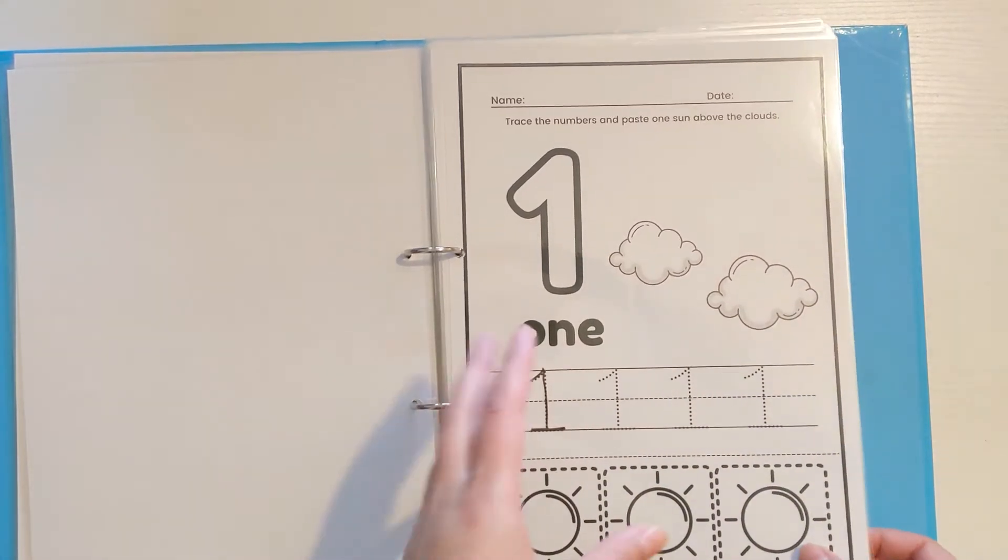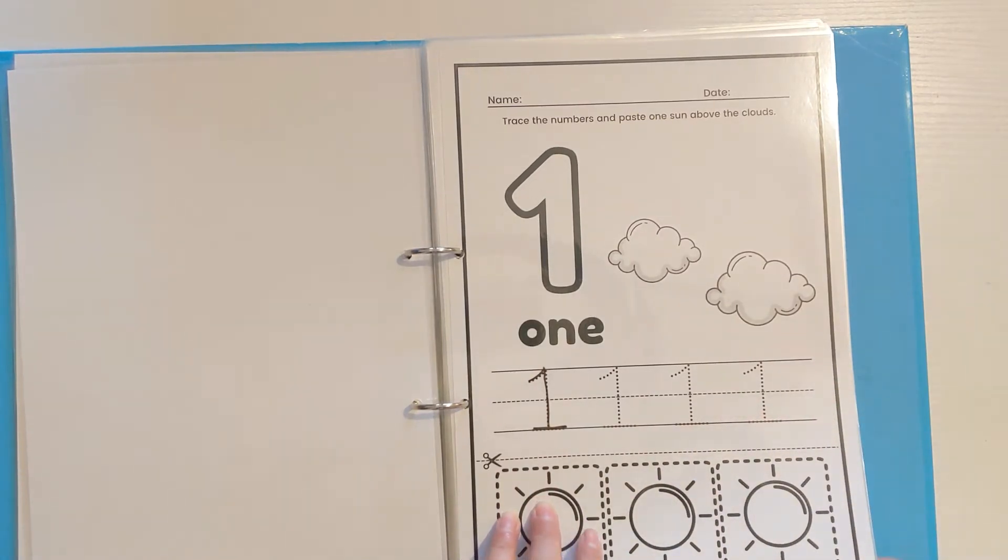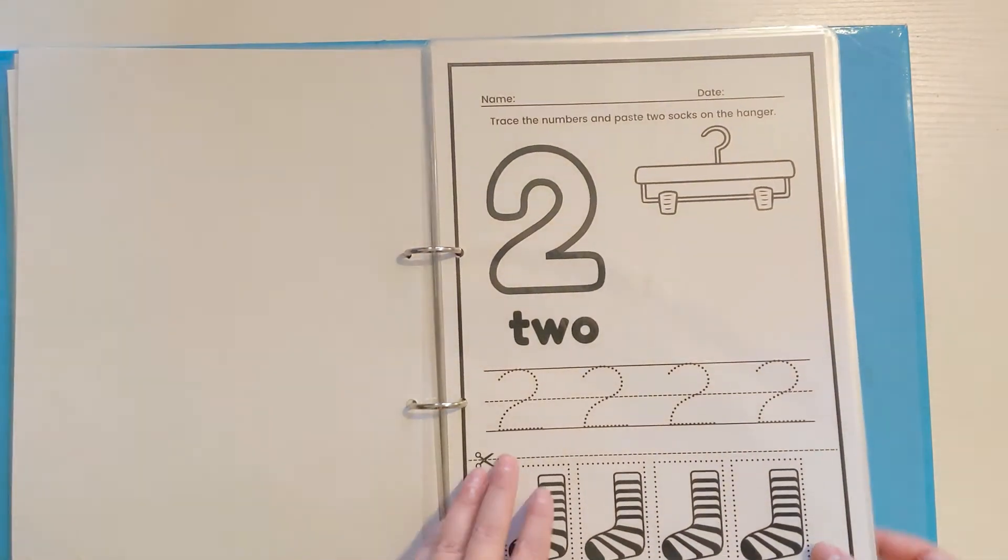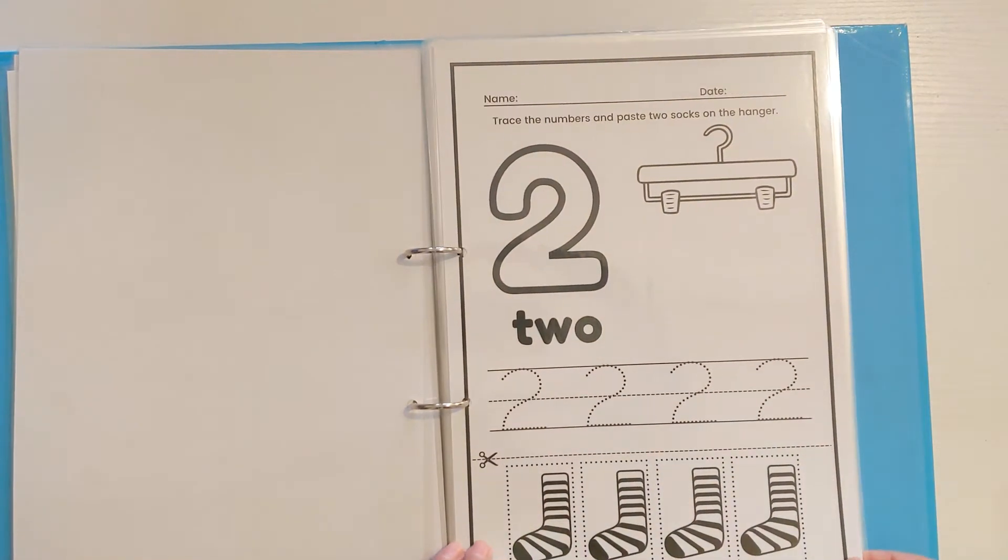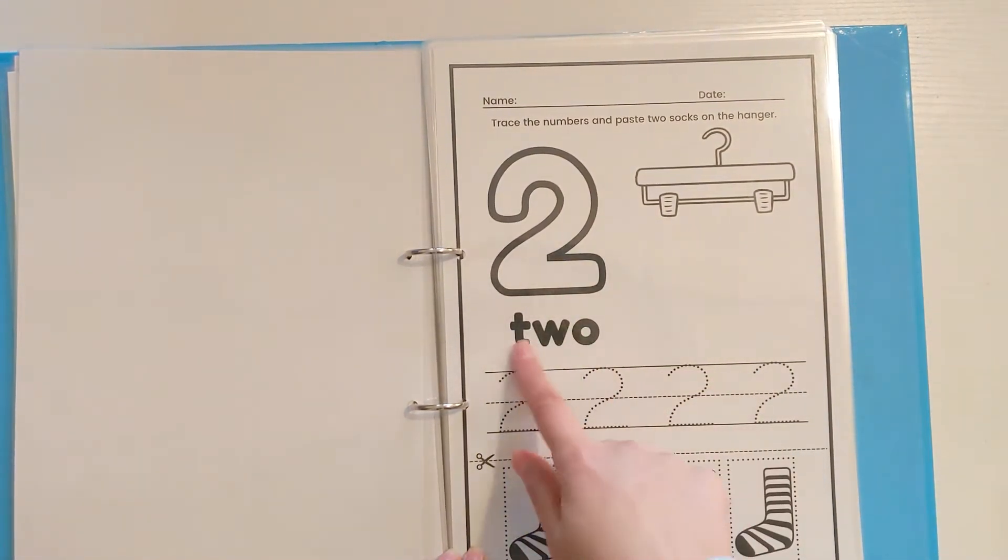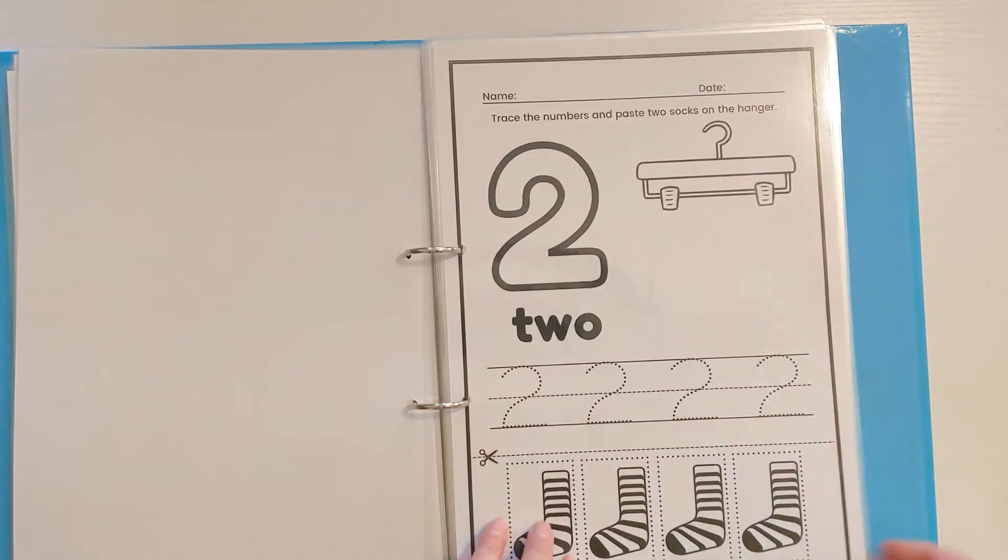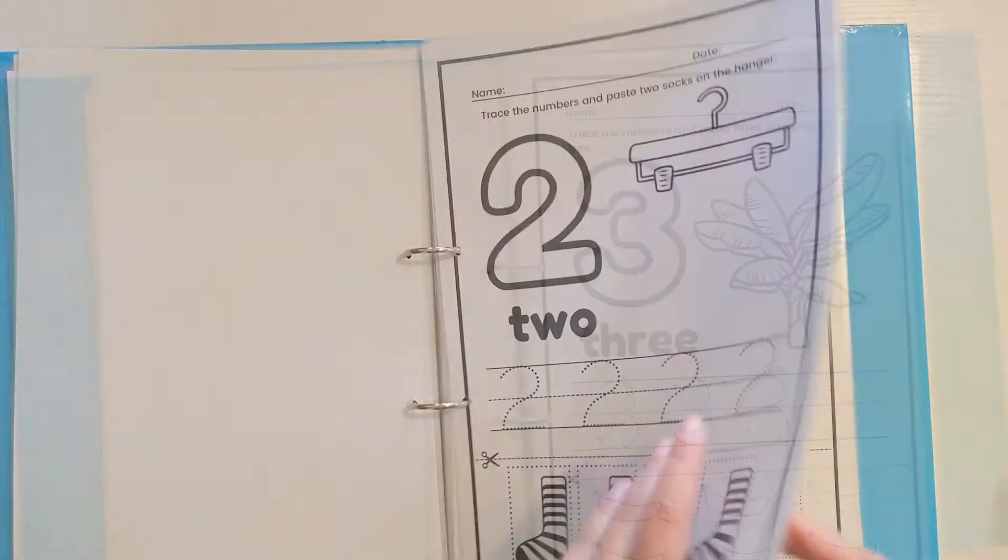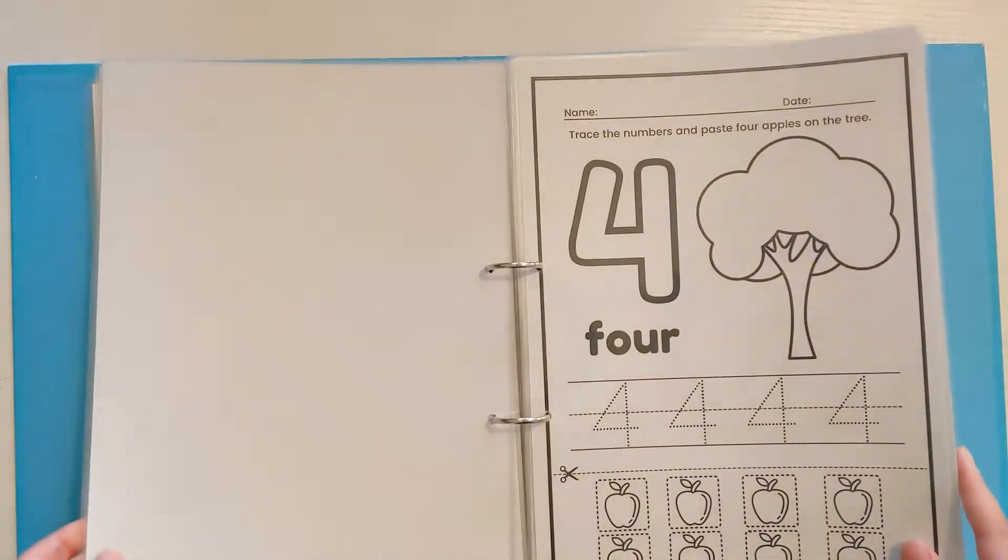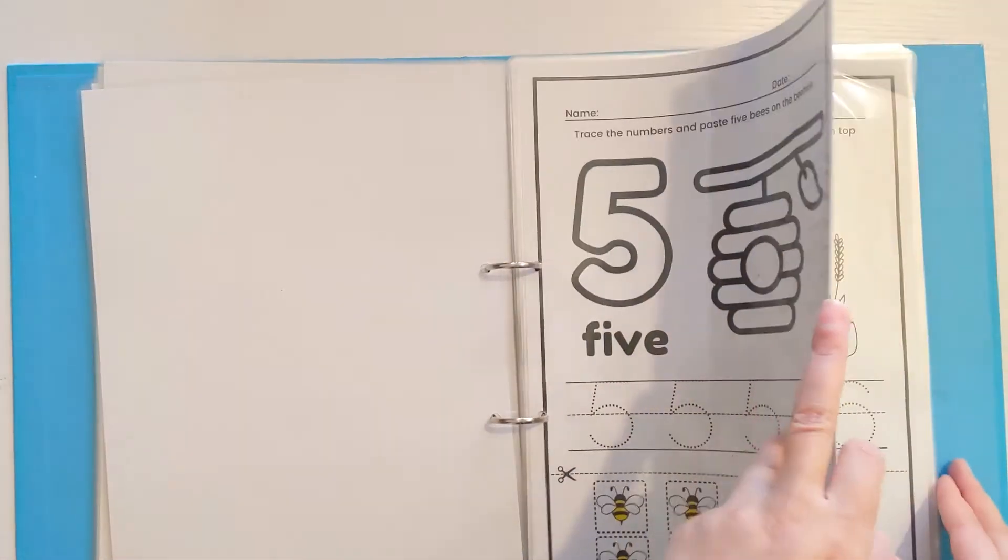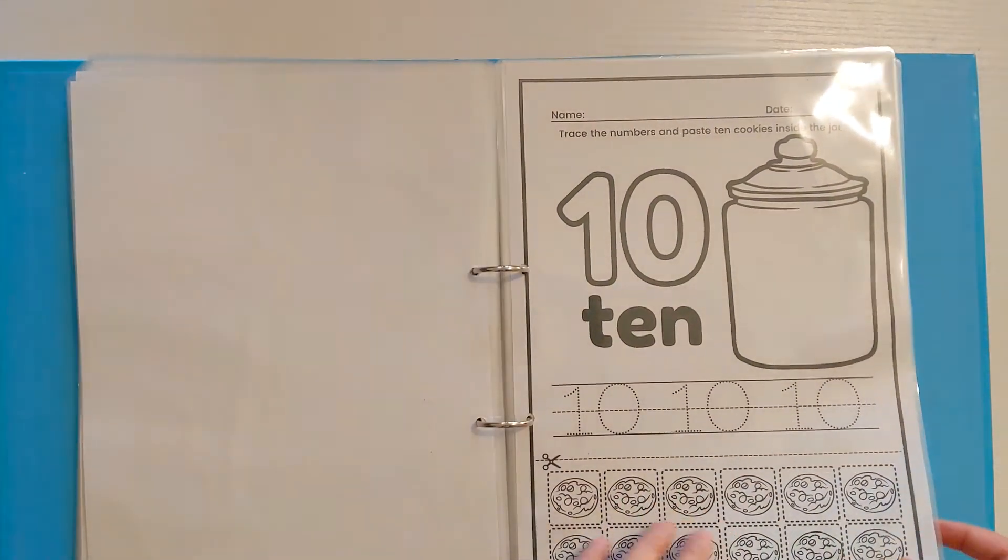For all of the pictures for this activity, there's more than the child needs but they'll have to count out the right amount. We've got that for number two as well. Trace the numbers and paste two socks on the hanger. They can color this in, look at the written word, join the dots, then cut out the pictures and choose two from the four and stick them on the hanger. We've got this for number three, four, five, all the way up to number ten which is the cookies in the jar picture.